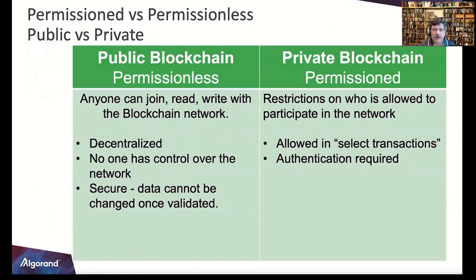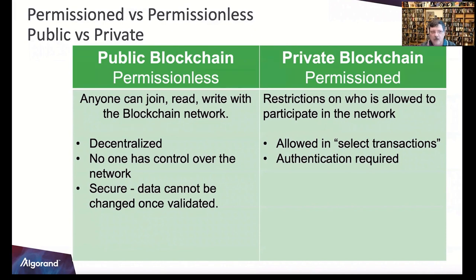This brings us to permissioned versus permissionless and public versus private. A public blockchain is a permissionless blockchain, and a private blockchain is a permissioned blockchain. Permissionless means anyone can join, read, and write — it's decentralized, no one has control. It's secure: data cannot be changed once validated, with one-way hashing algorithms pointing to the next block. Permissioned blockchains restrict who can participate and require authentication.